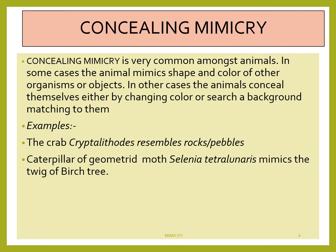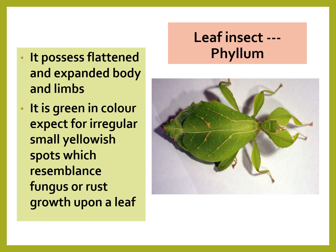Concealing mimicry is very common among animals. In some cases, animals mimic the shape and color of other organisms or objects. In other cases, the animal conceals itself either by changing color or searching for a background matching to them. For example, the crab cryptolithodes resembles pebbles or rocks. Second is the caterpillar of the geometrid moth selenia, which mimics the twig of a birch tree. Third is the leaf insect phylum, which possesses a flat expanded body and limbs. It is green in color, except for irregular small yellowish spots which resemble fungus or rust grown upon a leaf.